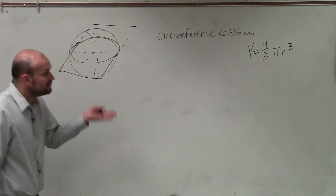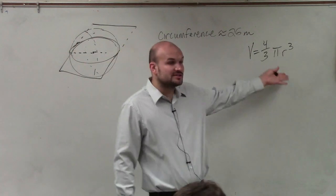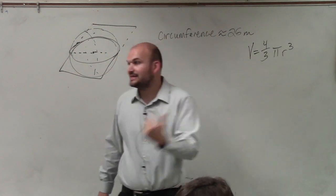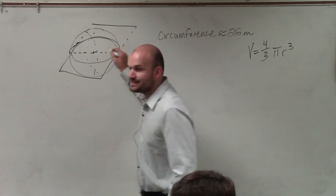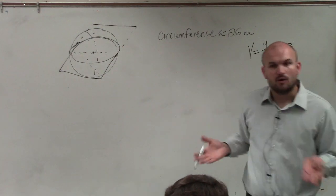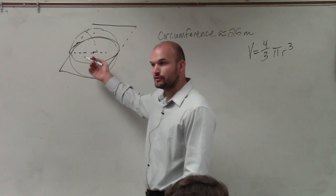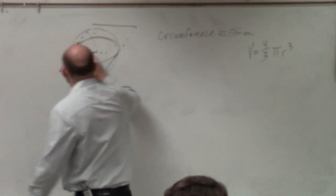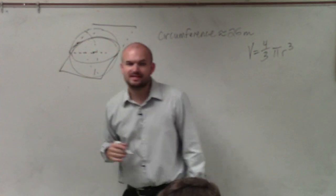So to figure this out, the only variable we need is r. We don't know what the radius is. The only thing they tell us is this great circle, right? Remember, we take a sphere and we can slice it right in half. What is exposed would be the distance of the great circle. And they say the circumference is 26 meters.